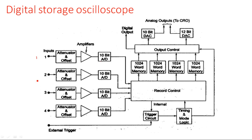In the block diagram, we have four channels — first, second, third, and fourth. Each channel can store 1024 bits of memory. If only two inputs are used, each channel can store 2048 bits. If only one channel is active, all four channel memory — around 4096 bits — can be sent through a single channel. The memory is divided accordingly.